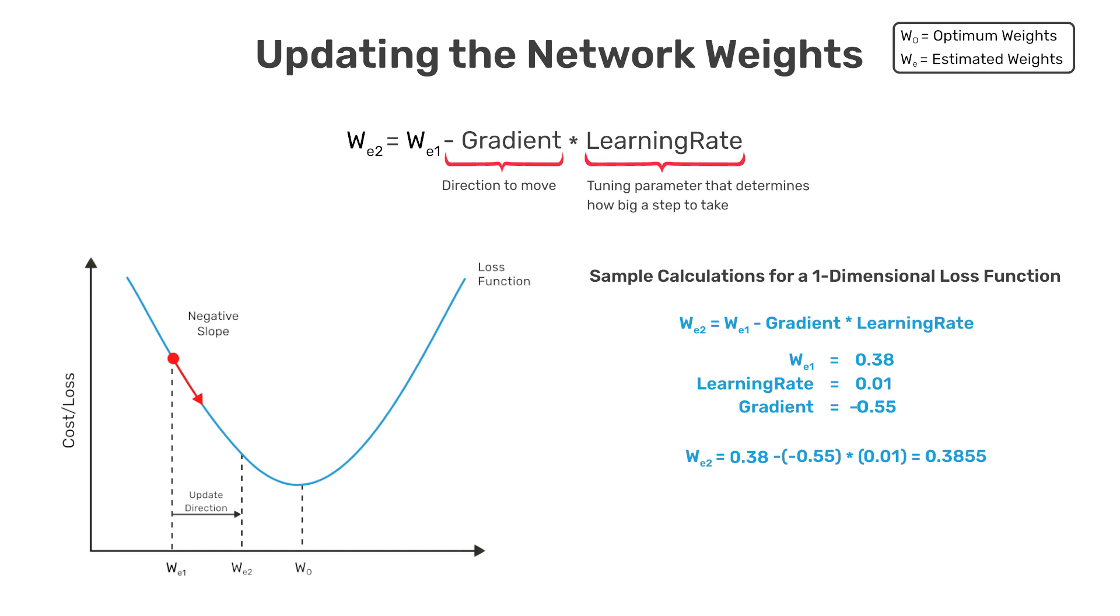One thing we haven't talked about yet is how you actually compute the gradient of the loss function with respect to the weights in the network. And fortunately, this is handled by an algorithm referred to as backpropagation, which is built into deep learning frameworks such as TensorFlow and PyTorch. And so it's not something that you need to implement yourself.